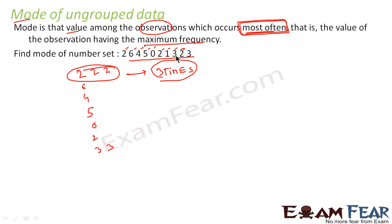So the mode for this data is 2. Mode is nothing but the value which occurs the maximum number of times. In this set of data, 3 occurs the maximum number of times, so the mode for this data is 3.